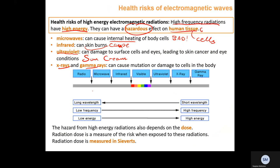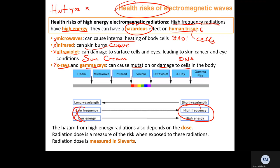X-rays and gamma rays have very high frequency and high energy and can cause mutation or damage to cells in the body, specifically the DNA. If asked about health risks, you must be specific about which ray does what to the body. The hazard from high-energy radiation depends on the dose — a brief exposure to gamma rays is unlikely to cause cancer, but prolonged exposure is far more likely to. Radiation dose is a measure of risk and is measured in sieverts.